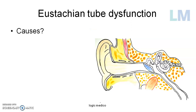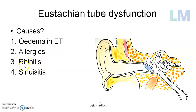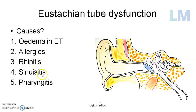Any edema at the level of the eustachian tube in the nasopharynx can block ventilation of the middle ear. Allergic conditions — allergic rhinitis (inflammation of the nose), sinusitis (inflammation of paranasal sinuses) — produce excess liquid that blocks the eustachian tube, and the mucosa becomes edematous or swollen. Pharyngitis, inflammation of the pharynx itself, can also block the eustachian tube. Any condition causing edema — whether allergy or inflammation in the surrounding area (rhinitis, sinusitis, pharyngitis) — will block the eustachian tube and prevent its normal function.